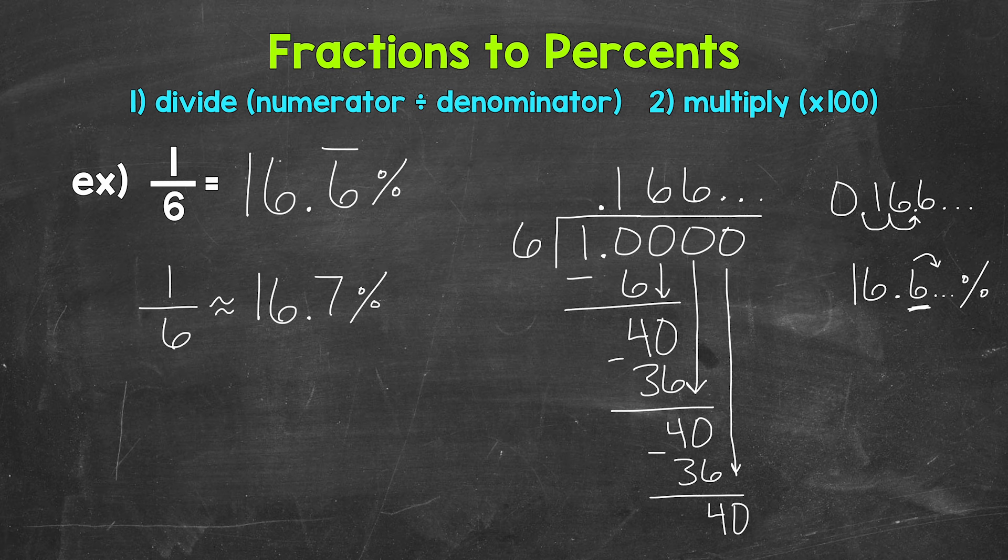Now let's round to the nearest whole percent. And we do this by rounding to the ones place. So does this round to 16 percent or 17 percent? Well, we have a 6 in the ones place with a 6 to the right in the tenths place. So this rounds up. 1/6 is approximately 17 percent.